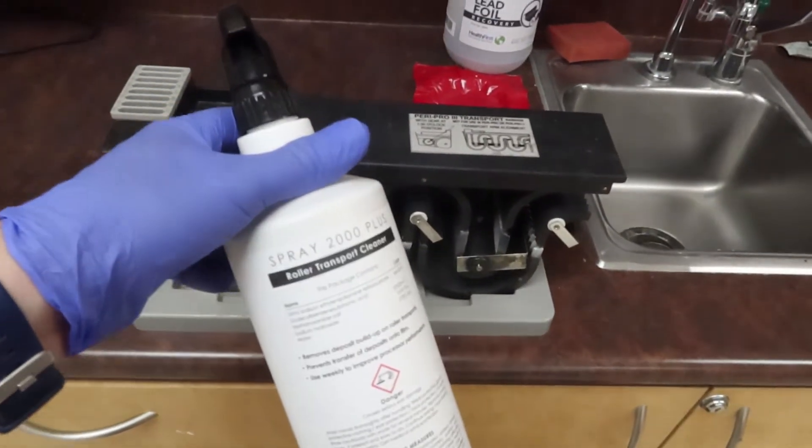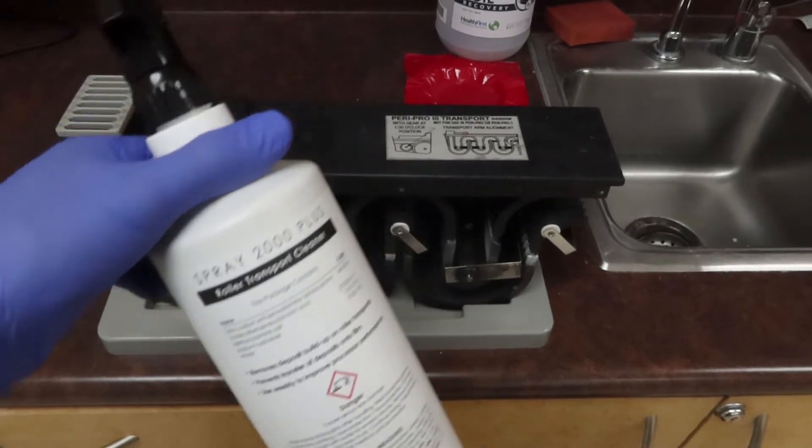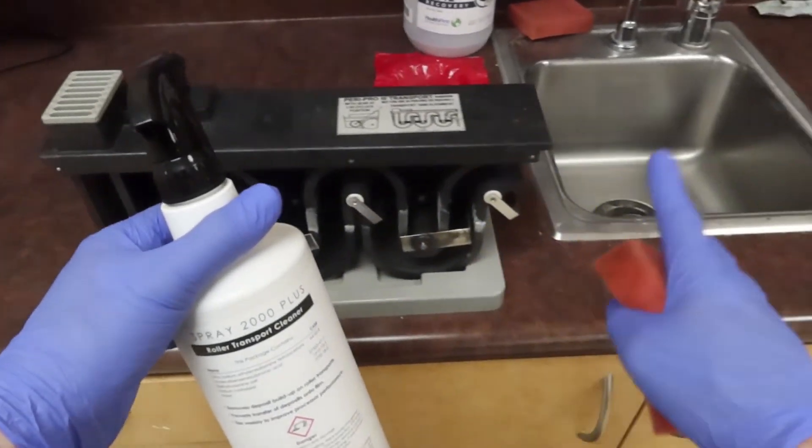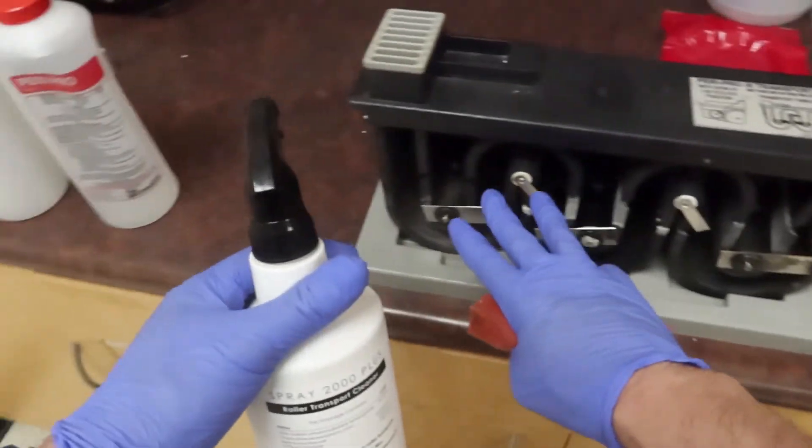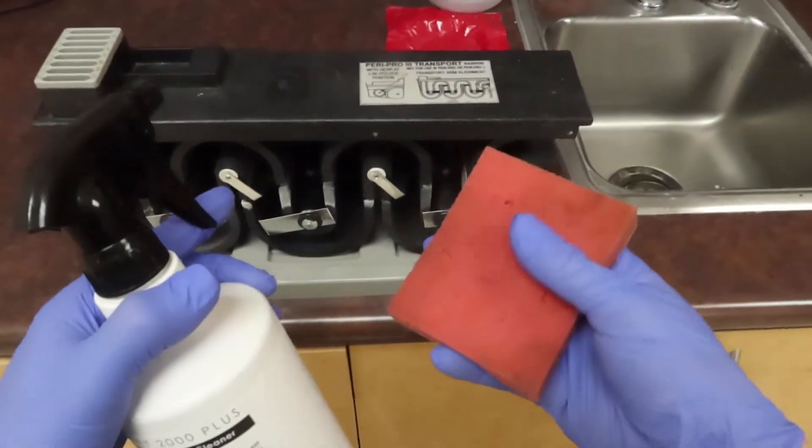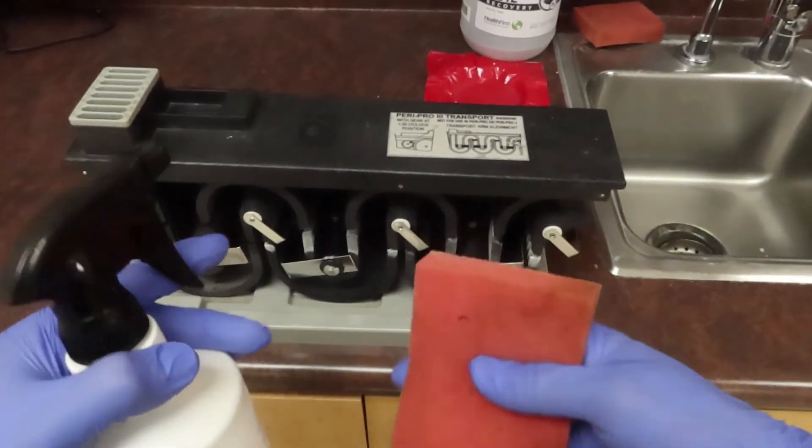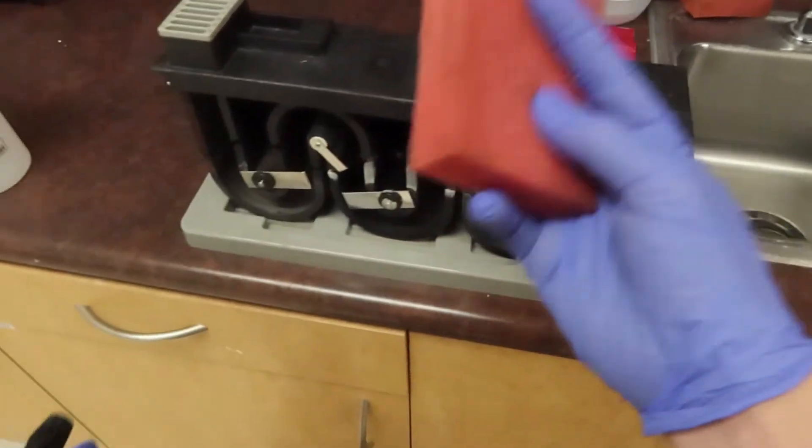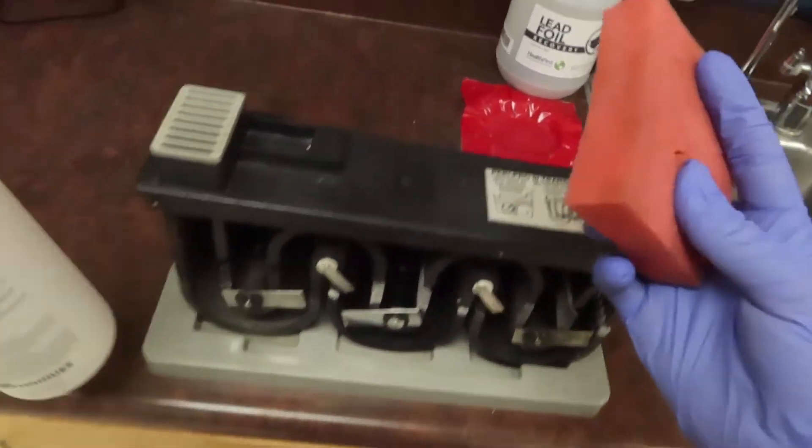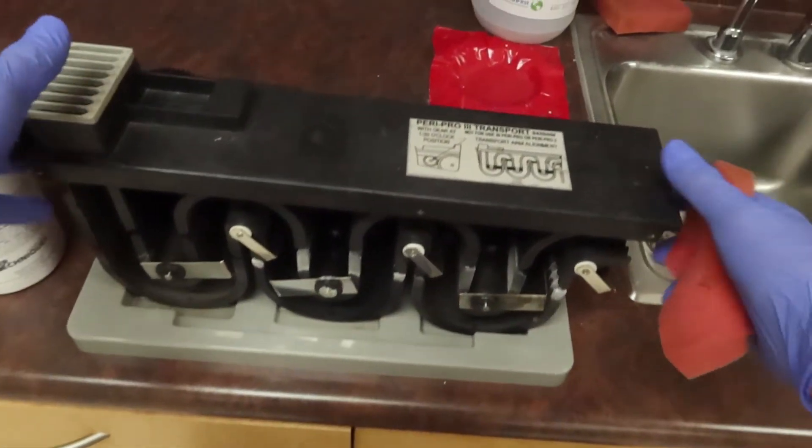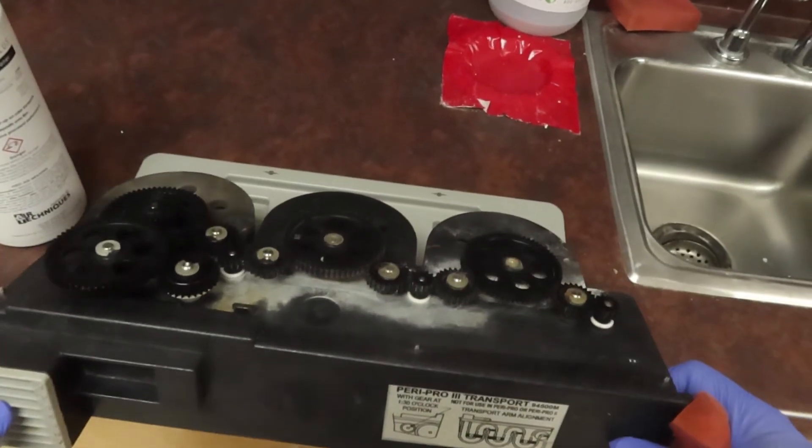The proper equipment that we're going to clean this out with is the Spray A2000 material that's going to get all the fixer, developer, and all that gunk out of this section, because we don't want any of this residue to transfer onto our films and give us a bad time. That, along with a nice non-abrasive sponge, is going to clean all the rack on the inside and clean the gears on the back.